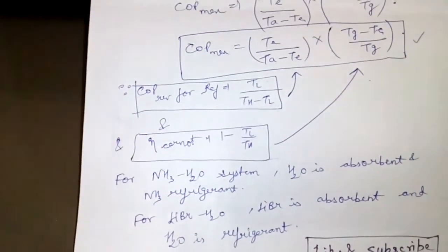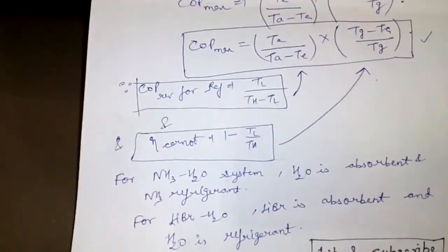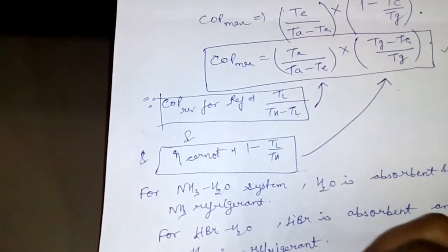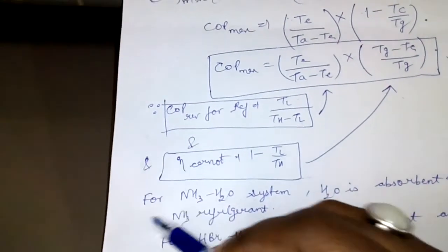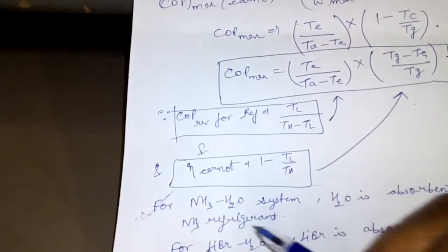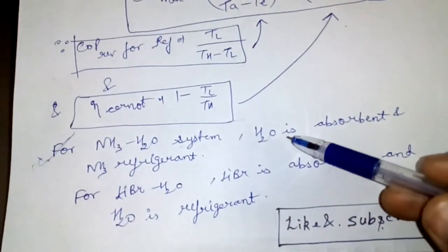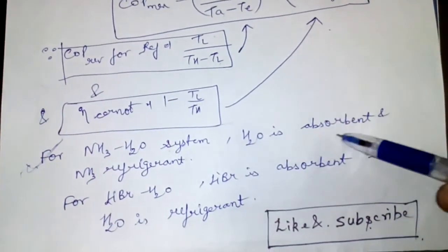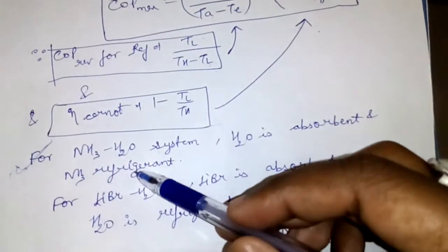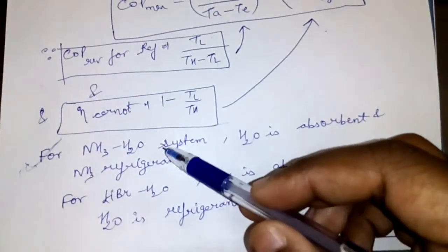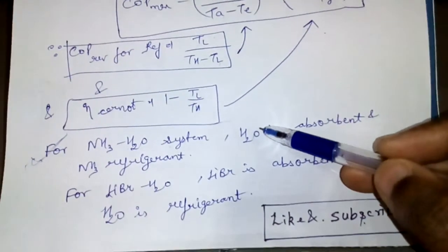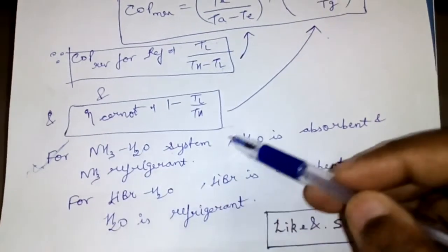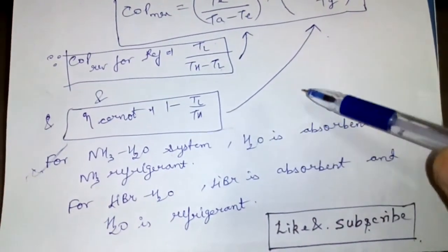There are mainly two types of VARS systems: one is NH3-H2O, that is ammonia-H2O system, and other is lithium bromide-H2O system. The most common is NH3-H2O system. In NH3-H2O system, H2O is absorbent, H2O is taken as liquid in absorber, and NH3 is taken as refrigerant for refrigeration purpose. H2O has very high affinity for NH3 vapors at low temperature and very low affinity for NH3 refrigerant at high temperature.